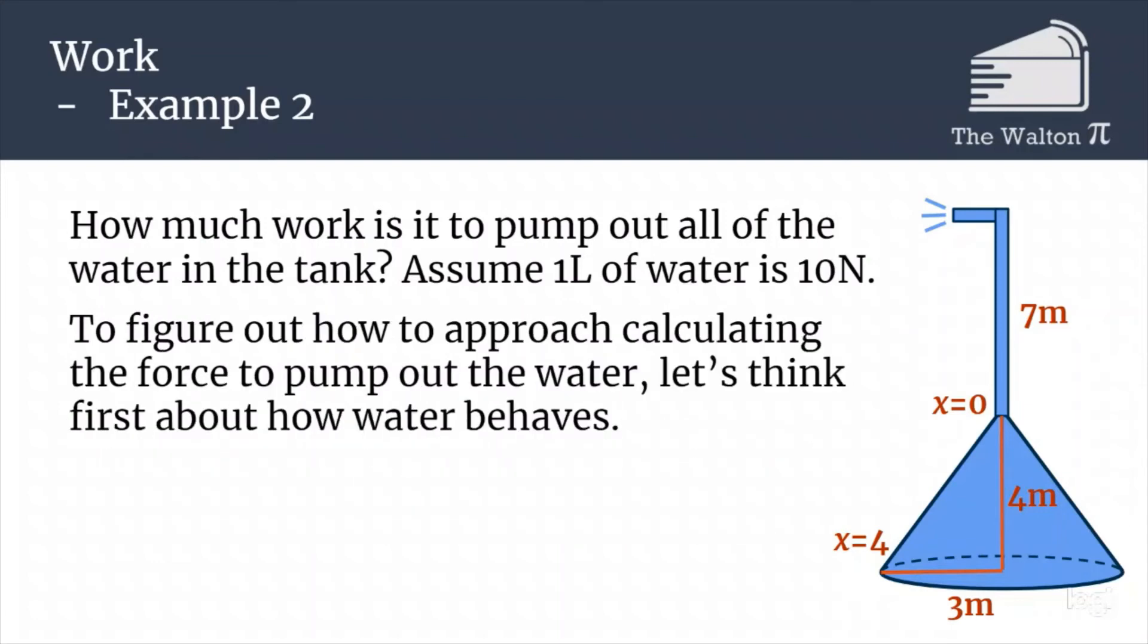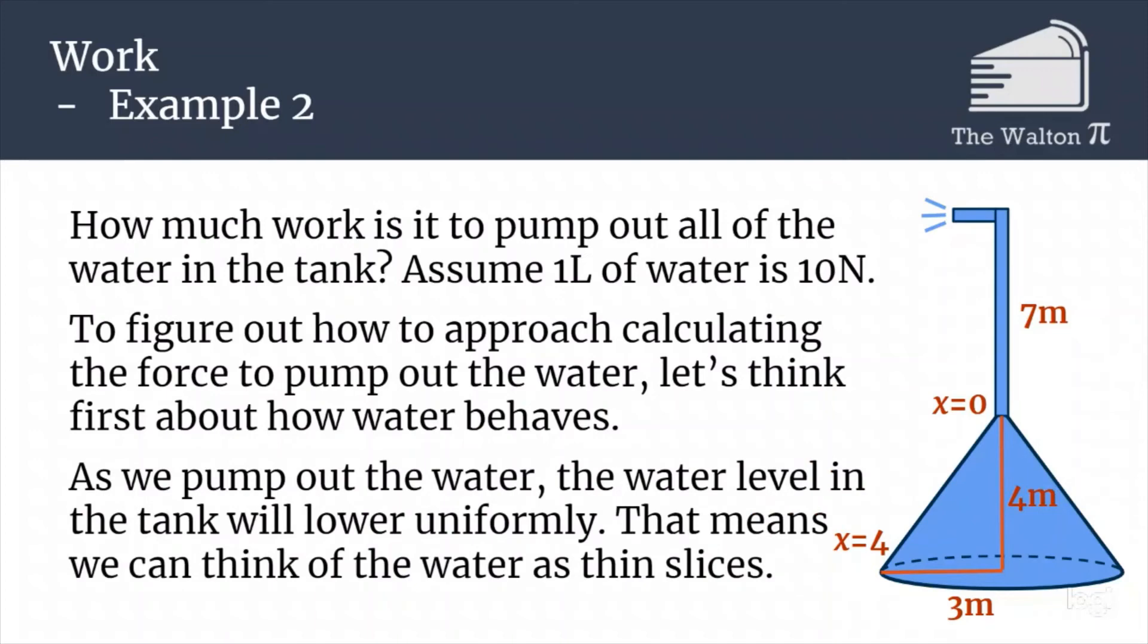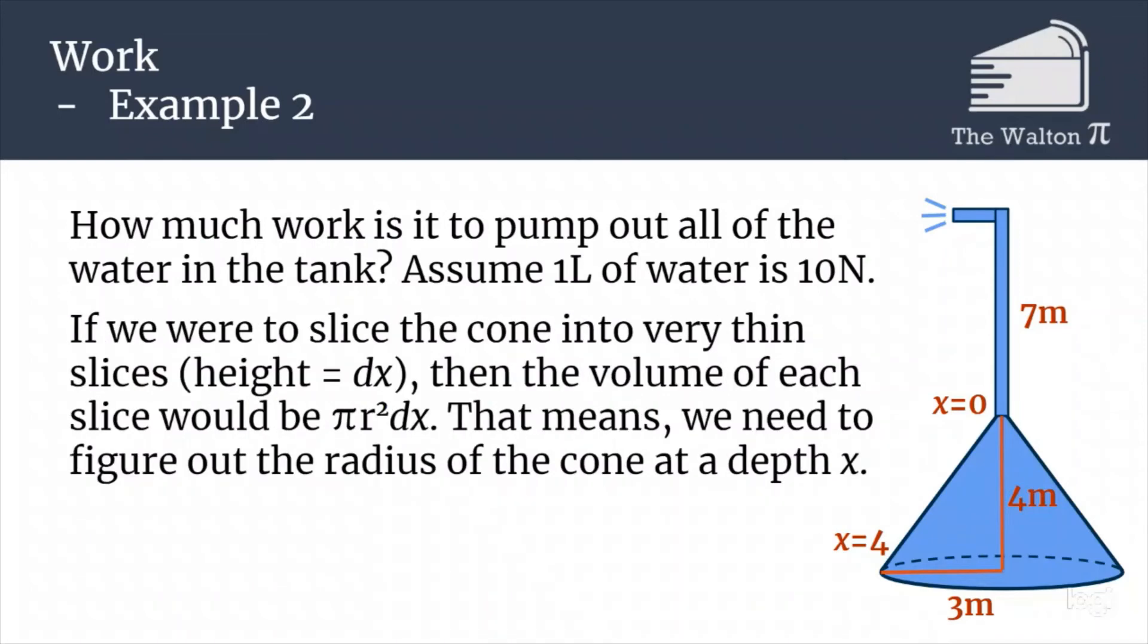To figure out how we would approach setting up this problem, let's think about how water behaves as we pump it out. As we're pumping water out, the water level in the tank is going to lower uniformly throughout the tank. If I pump a little bit of water out from the left side of the tank, the right side is also going to go down by the exact same amount. That means as we are pumping it out, it's moving down as an entire surface, so we can think of the water as very thin. If we slice the cone up into thin slices where the thickness of the slice is dx, infinitely small slices, that means the volume of each slice, because they're all cylinders, is going to be pi r squared dx.